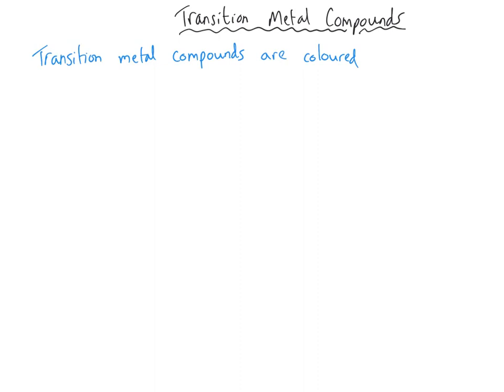The second property to discuss is colour. Transition metal compounds are very colourful and have been used for many thousands of years to give wonderful colours for dyes, for clothing, and other substances — before we even knew what a transition metal was, these were being used.